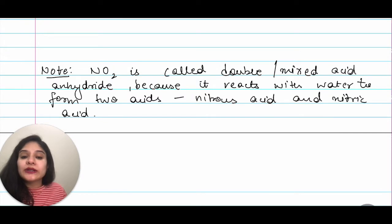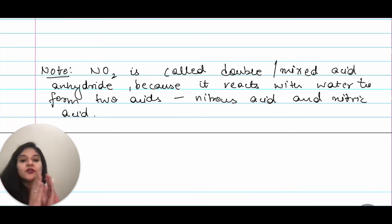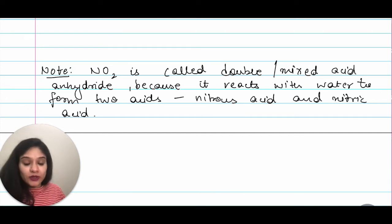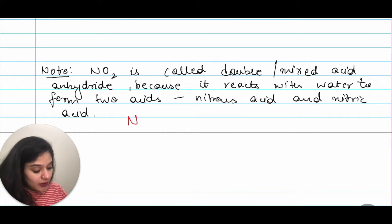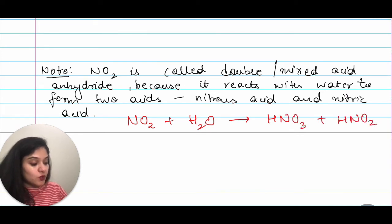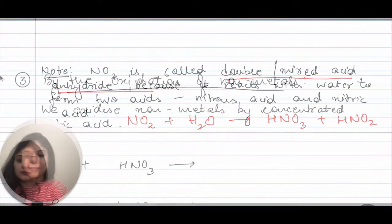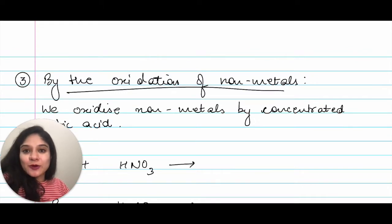NO₂ is called a double or mixed acid anhydride because it reacts with water to give both nitrous acid and nitric acid. The equation is: NO₂ + H₂O → HNO₃ + HNO₂. Since it produces both nitric acid and nitrous acid, it is therefore called a double or mixed acid anhydride.